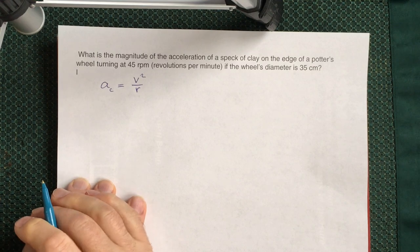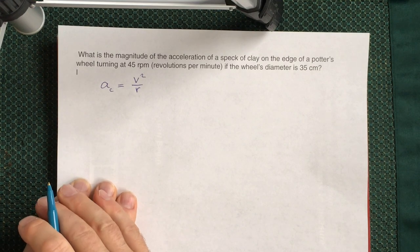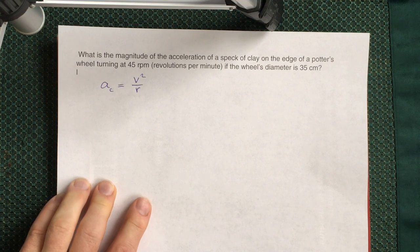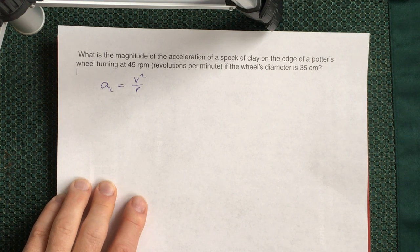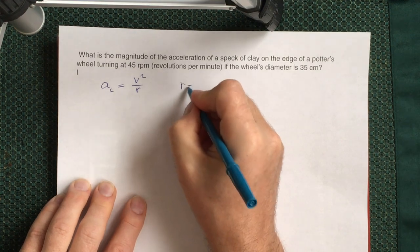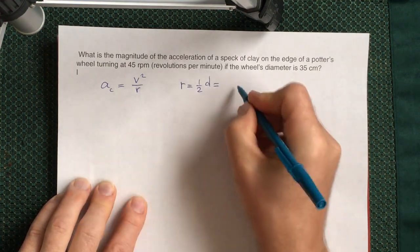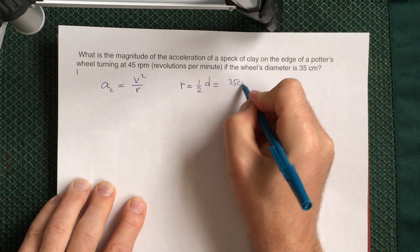r is the radius of rotation and v is the linear velocity with which you rotate. We are talking about the point which is at the edge of the potter's wheel. So your r in our case would be half of the diameter, so it would be 35 cm divided by 2.